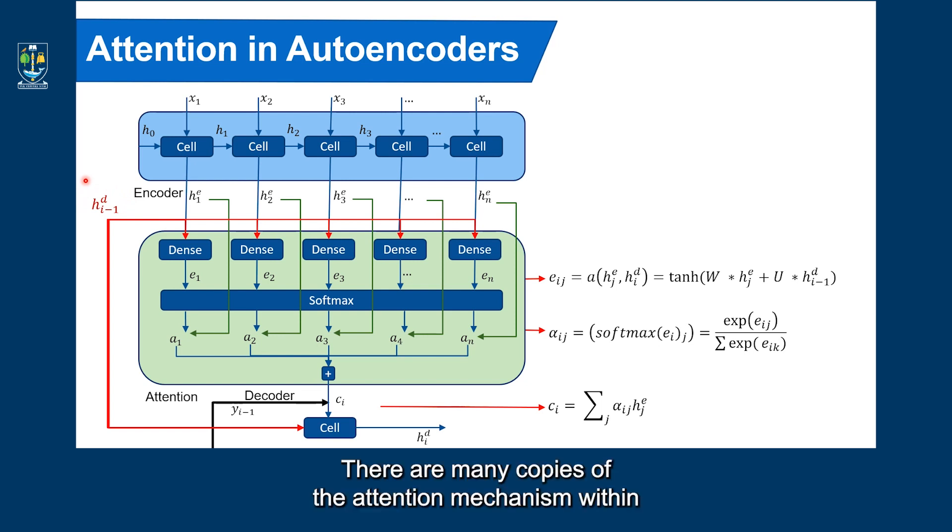There are many copies of the attention mechanism within the encoder-decoder network, but they all share the same weights, so there is no extra overhead in the number of parameters to be learned.